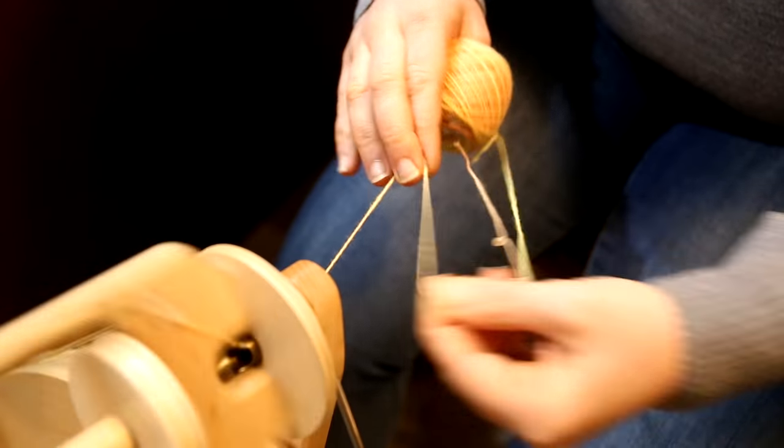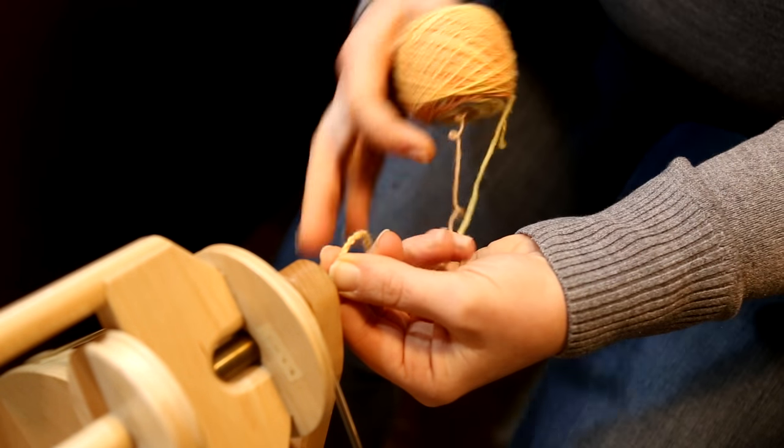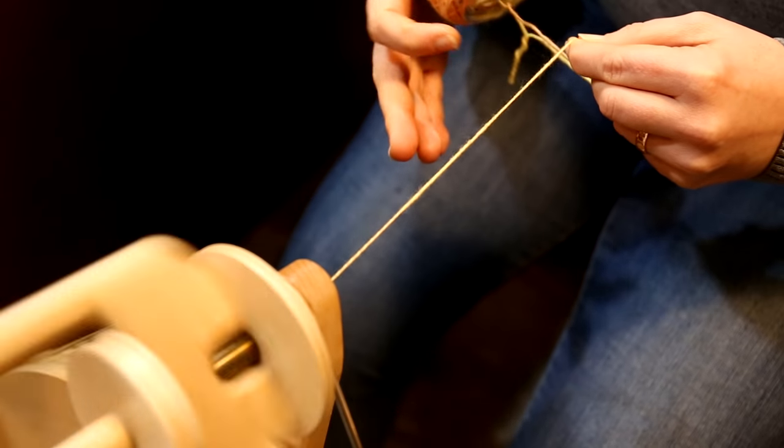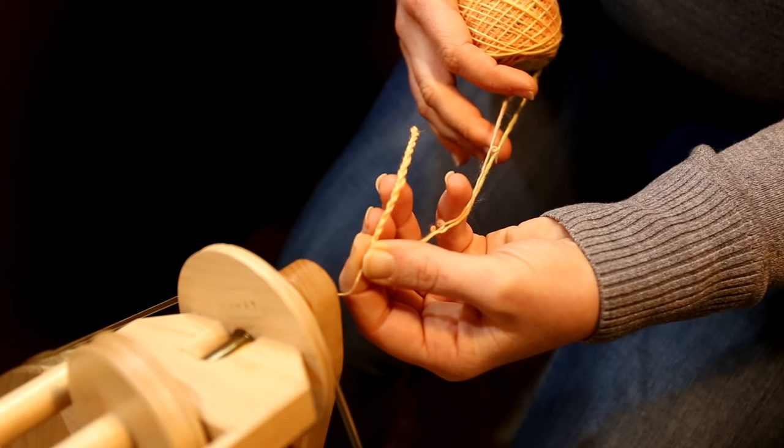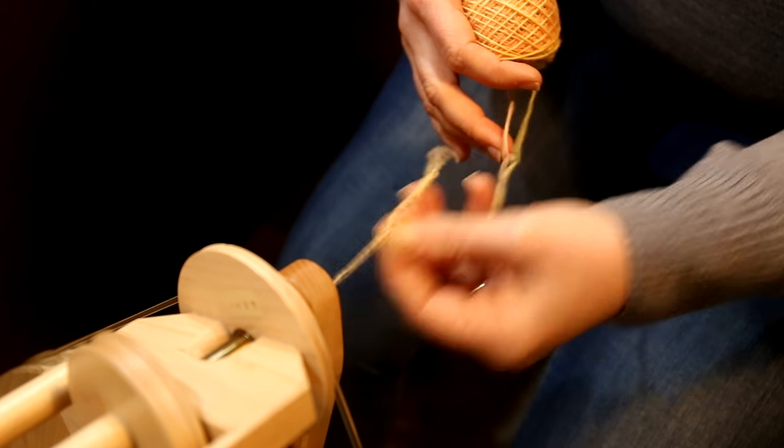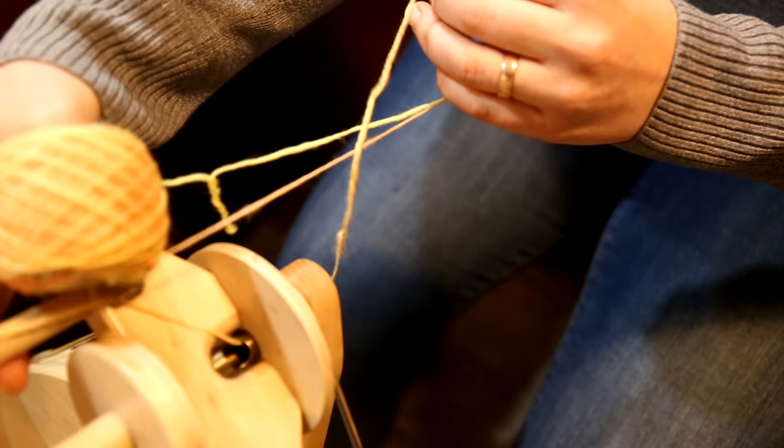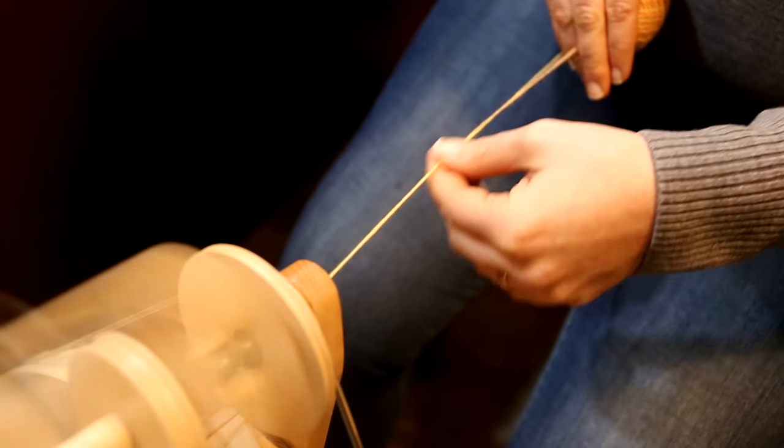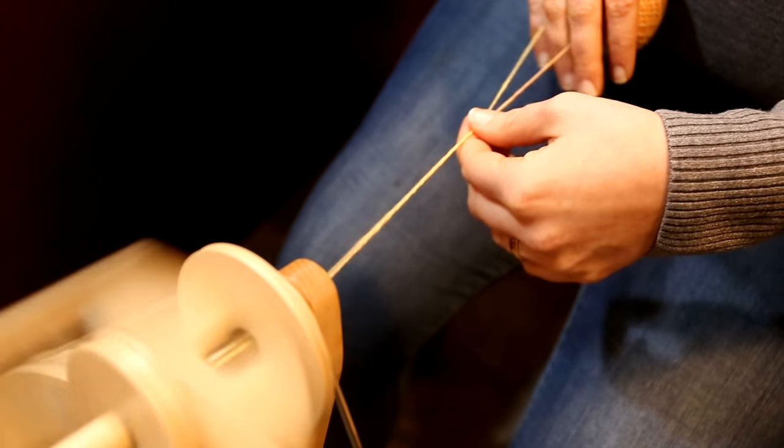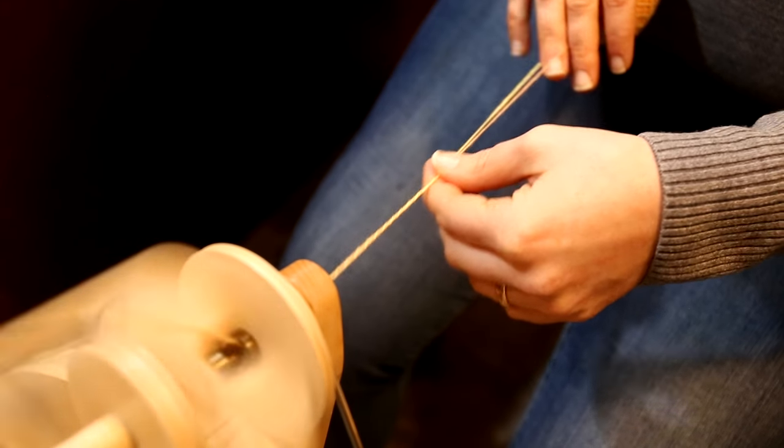Now cable plied yarns can often be under-plied or over-plied. When you're plying, you need to think about the fact that when you wash it, it's going to lose some of that ply twist. So be sure to add enough twist when you're cabling to account for that twist that will be lost in the wash. And of course if it's under-twisted after washing, you can always pop it back through the wheel and add that little bit of twist that you need.